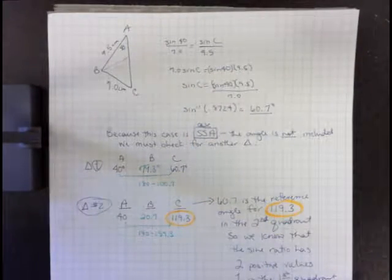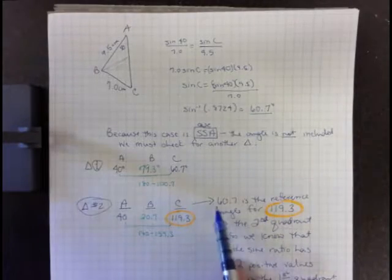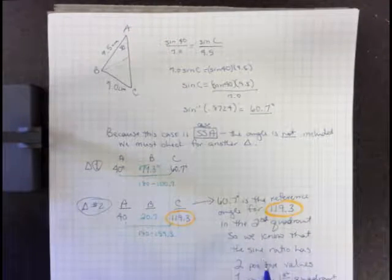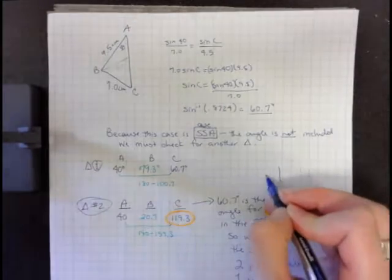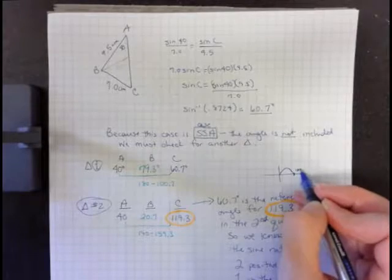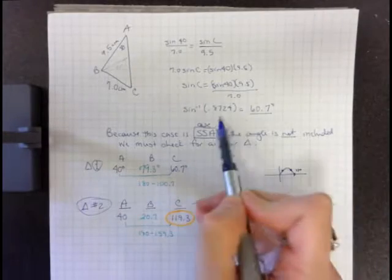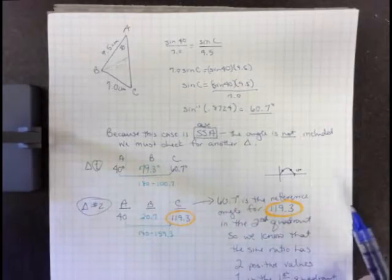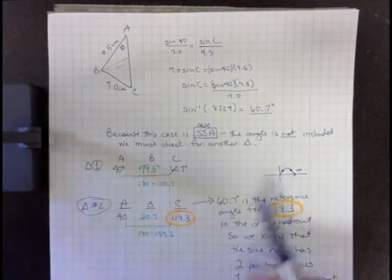Now we're going to look for the next triangle. In order to do that, we just have to understand that the reference angle is 60.7 degrees, and we know that the sine ratio has two positive values in both the first quadrant and the second quadrant. So I know that I'm going to have two angle measures that fall in the value of 0.8724.